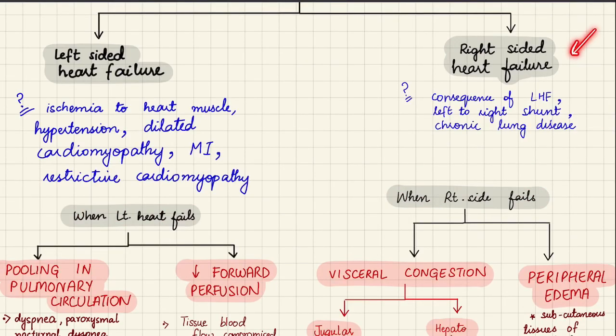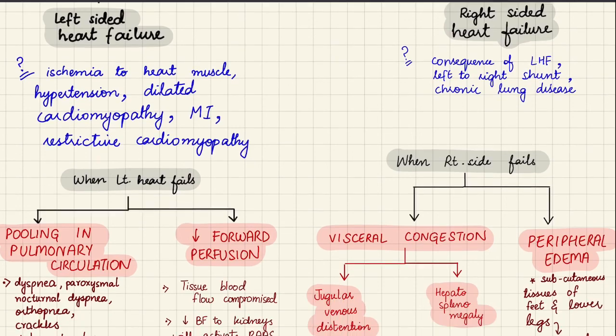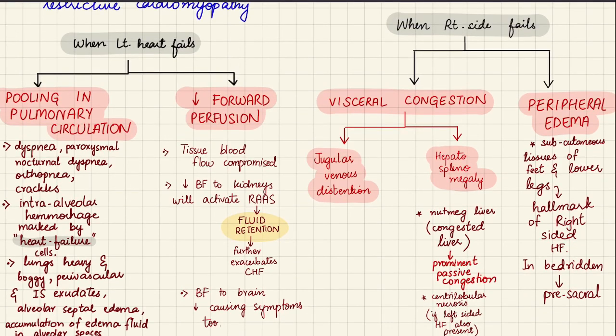Right-sided heart failure is usually a consequence of left-sided heart failure: when the left side fails, blood pools in the pulmonary circulation, increasing pressures against which the right heart must pump. Since the right heart does not normally work as hard as the left, additional workload causes it to fail. A left-to-right shunt shunting extra blood to the right side, and chronic lung disease increasing pulmonary blood pressure and resistance, can also cause the right side to fail.